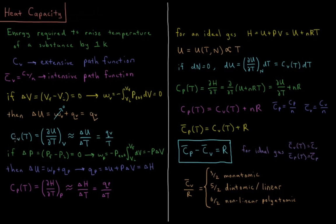The constant volume heat capacity Cv as a function of T equals the partial derivative of internal energy with respect to temperature at constant volume, which is approximately equal to delta U over delta T, provided this is over a sufficiently small range in temperature.